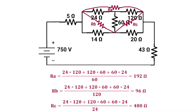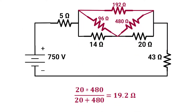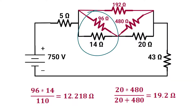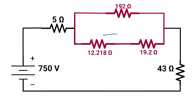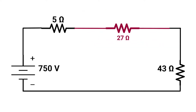Rc equals 96 ohm. Now we have two parallel resistors: 20 times 480 over 20 plus 480, which will equal 19.2 ohm. Also another two parallel resistors: 96 times 14 over 96 plus 14, which will equal 12.218 ohm. Now we have two series resistors, so the total for those two will equal 12.218 plus 19.2, which will equal 31.418 ohm.